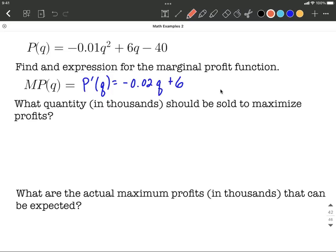So instead, let's go ahead and set this equal to 0. Negative 0.02Q plus 6. Set it equal to 0. Do a little bit of solving. So we'll subtract 6 initially.